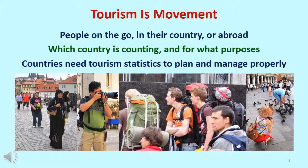Tourism is people on the go, in their own country or in another. So how do these two simple types of trips turn into six types of tourism flows? The answer is, it depends on which country is counting the tourists and for what purposes. This becomes evident in the definitions that follow.